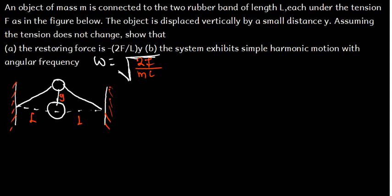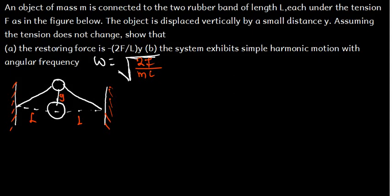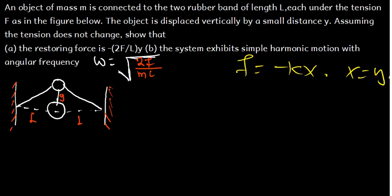The first thing we need to understand — we have been given the diagram. When we talk about the restoring force, we use the general formula: negative KX, where K is a constant. In this case, the displacement is Y rather than X, so we are going to say that the restoring force F equals negative K times Y.